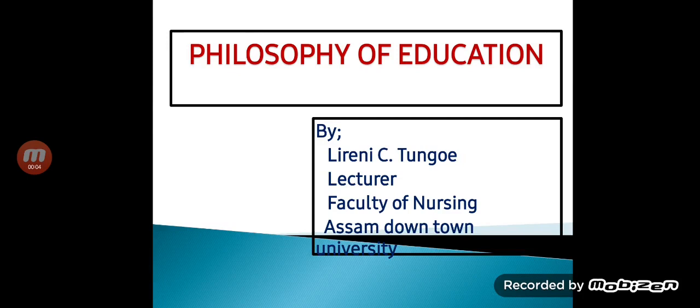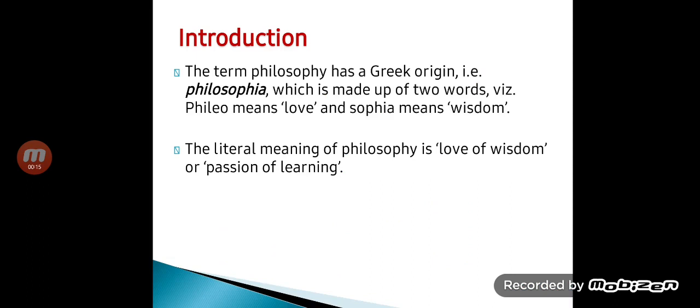Good morning everyone. Today we will discuss another topic from unit one: philosophy of education. Philosophy is originated from a Greek word, philosophia, which is made up of two words — philio means love and sophia means wisdom. So the literal meaning of philosophy is love of wisdom or passion for learning.